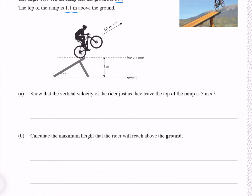Show that the vertical velocity of the rider, just as they leave the top of the ramp, is 5 meters per second. We'll start by drawing our vector triangle. We have our rider's velocity of 10 meters per second, which can be split up into a horizontal component — the angle between which is 30 degrees — as well as our vertical component, and we of course have a right angle. In this right angle triangle, our vertical component forms the opposite side, and the other side we know is of course our hypotenuse.